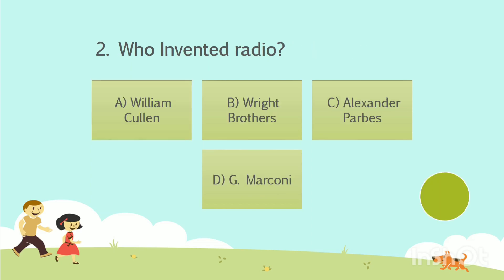Question No. 2: Who invented radio? Option A: William Cullen. Option B: Wright Brothers. Option C: Alexander Popps. Option D: G. Marconi. Your time starts now. The answer is Option D: G. Marconi.